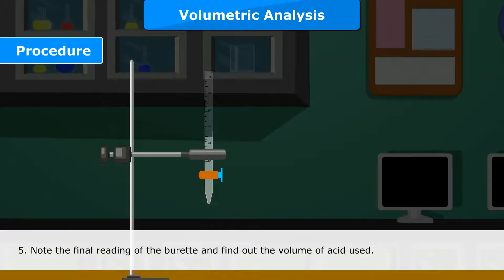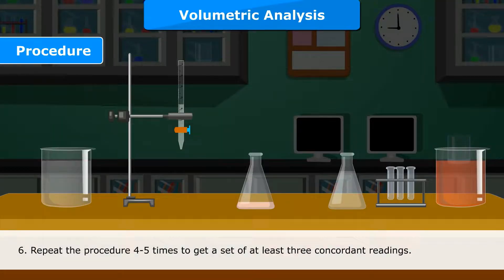Note the final reading of the burette and find out the volume of acid used. Repeat the procedure 4-5 times to get a set of at least 3 concordant readings.